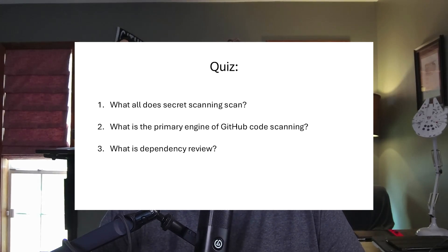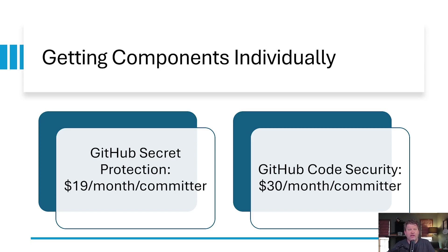You might be wondering if you need all three components or if you can get them individually. Good news: as of April 2025, GitHub has unbundled GHAS into two separate products. You can now purchase GitHub Secret Protection for $19 per month per active committer, which includes secret scanning and push protection, or GitHub Code Security for $30 per month per active committer, which includes code scanning, dependency review, and Copilot autofix. This means you can start with just secret scanning if that's your biggest concern, or focus on code scanning if that's where you see the most value. You're no longer required to purchase the full GHAS bundle.